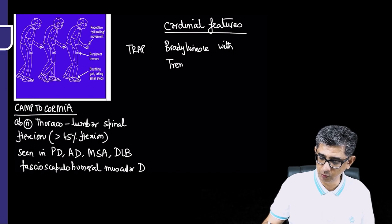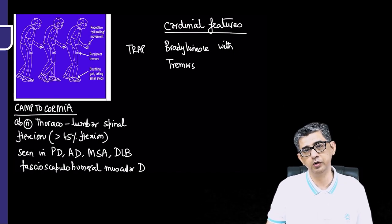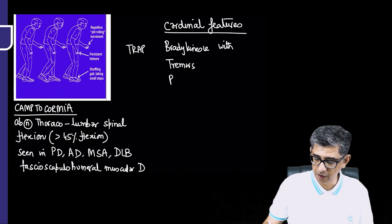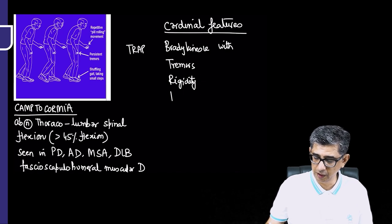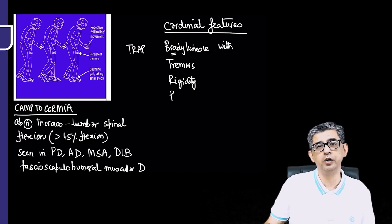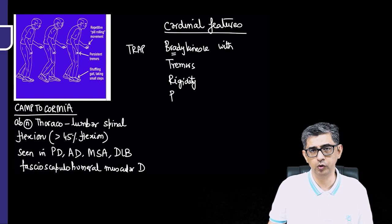The T alphabet can be used to remember the tremors component, alphabet R can be used to remember the rigidity, which could be written as cogwheel or lead pipe rigidity. And then alphabet A can be used to remember the A component of bradykinesia, which will be severe enough to cause the person to become wheelchair bound, that is akinesia.